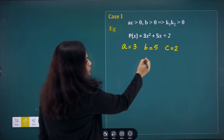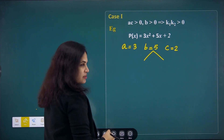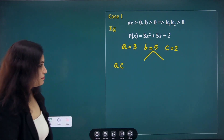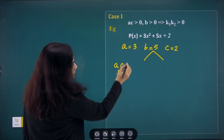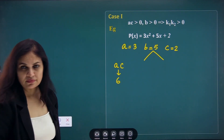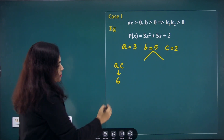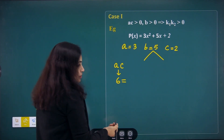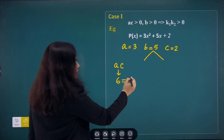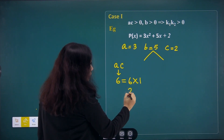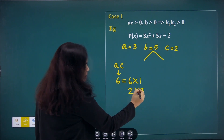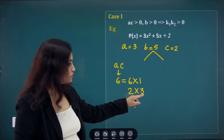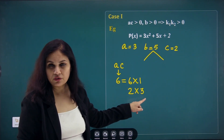We need to split b into two parts, which depends on the product ac. Here ac = 3 × 2 = 6. The possible factor pairs of 6 are: 6 × 1 or 2 × 3. So 6 can be expressed either as a product of 6 and 1, or as a product of 2 and 3.